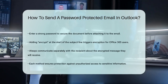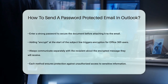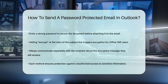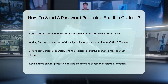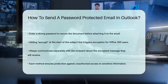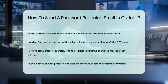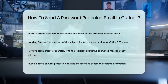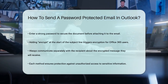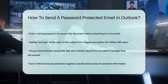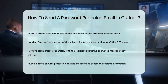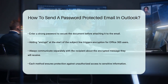Using #Encrypt in the subject line: for users on the Office 365 platform, there's a simpler method. Compose a new email and add #Encrypt at the beginning of the subject line, finish composing your email and send it. This will trigger the email to be encrypted. Make sure to send a separate email to the recipient explaining that they will receive an encrypted message.